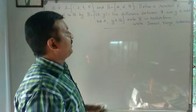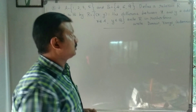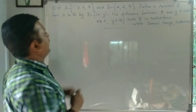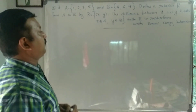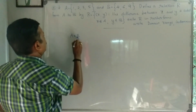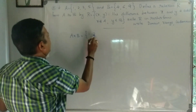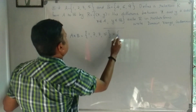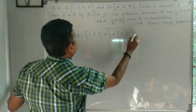We need to find the domain, range, and codomain. A = {1, 2, 3, 5}, B = {4, 6, 9}. First, let's form A cross B: {1, 2, 3, 5} × {4, 6, 9}.